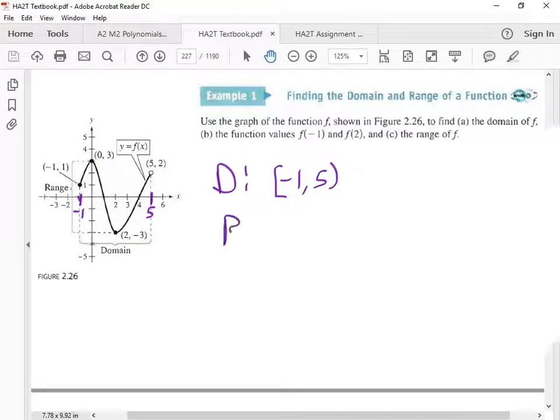What about range? For range, we're looking at the y-axis, so we're looking up and down here. What's my lowest y value? Negative 3. What's my highest? 3. So negative 3, bracket or parenthesis? Bracket. Positive 3? Bracket. That's domain and range.